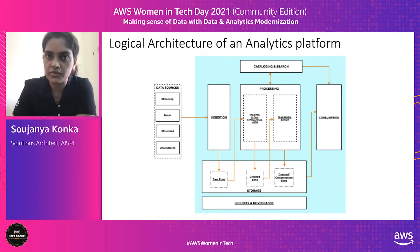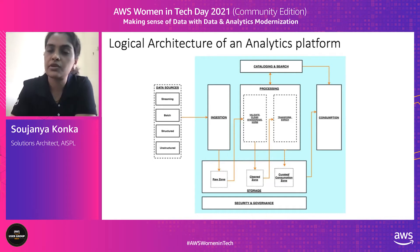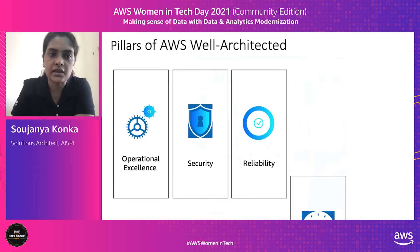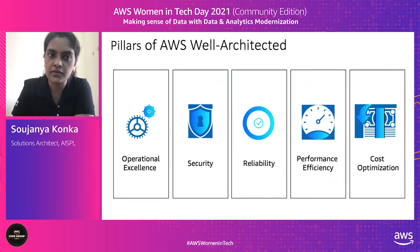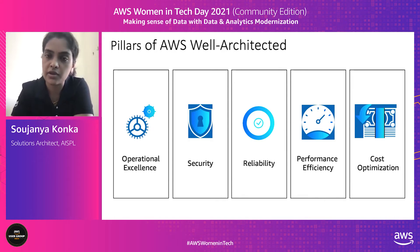Now that we understand the different components involved in designing an application to deal with processing incoming data, let's look at some best practices and guidelines from the AWS platform — what we suggest to our customers. On the slide, you will see five different pillars of the AWS Well-Architected Framework. From this point, I'll make a gentle start introducing you to the AWS platform and services.